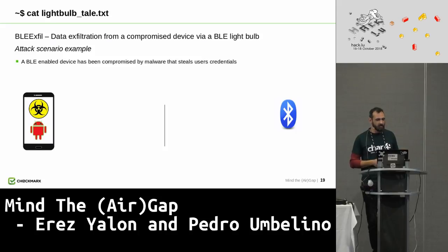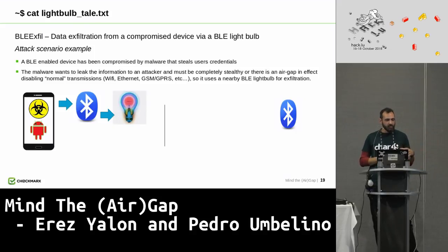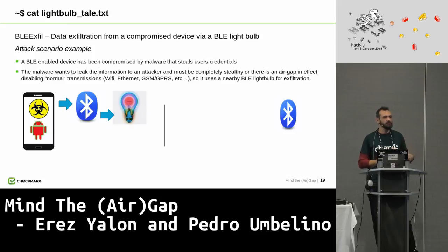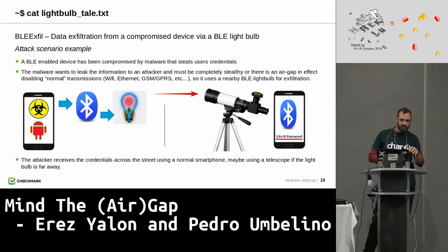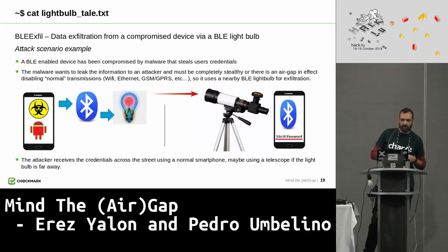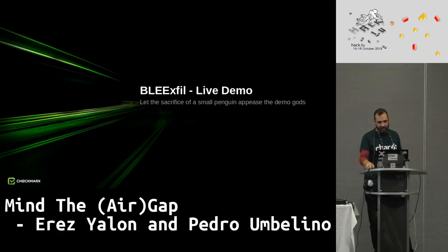The attack scenario: imagine a device compromised by malware that steals user credentials. The malware wants to leak this information stealthily without using Wi-Fi, Ethernet, or GSM. Bluetooth Low Energy doesn't have very long range, but light shining on a room can be picked up at a longer distance. So the attacker uses Bluetooth to scan for nearby lamps, discovers the vulnerable lamp, and uses it to exfiltrate data. The receiver just has to point a smartphone at an area illuminated by the lamp.